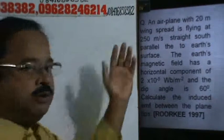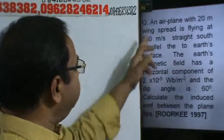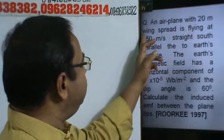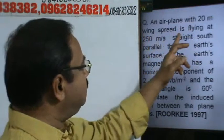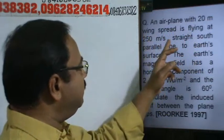Let us solve a numerical problem based on electromagnetic induction. The first problem is: an aeroplane with 20 meter wing spread is flying at 250 meters per second straight south, parallel to the earth's surface.